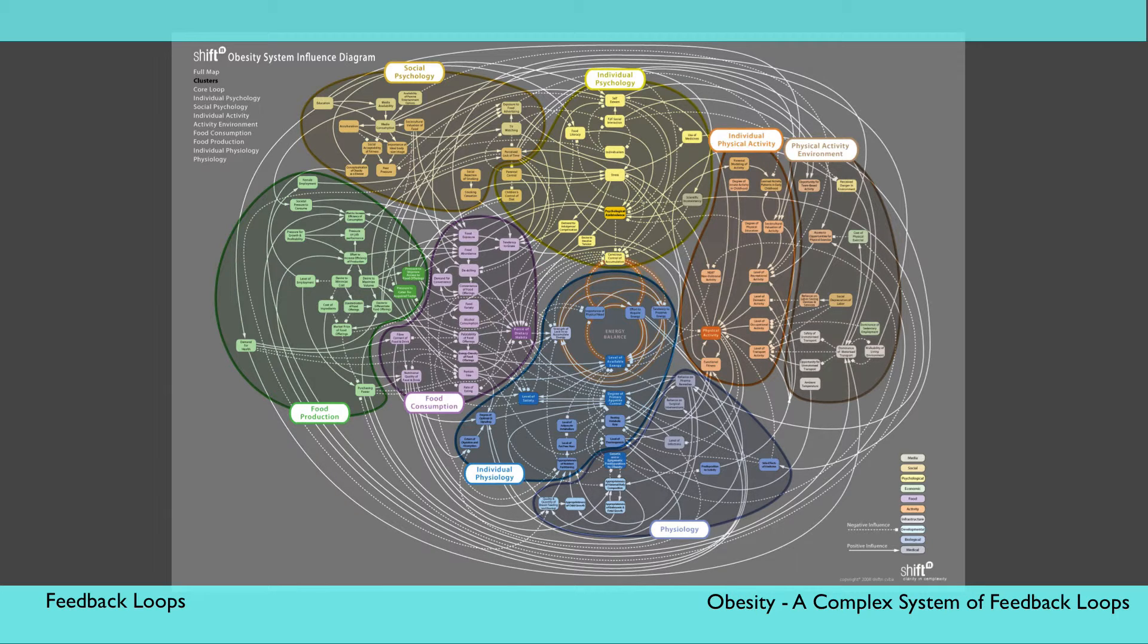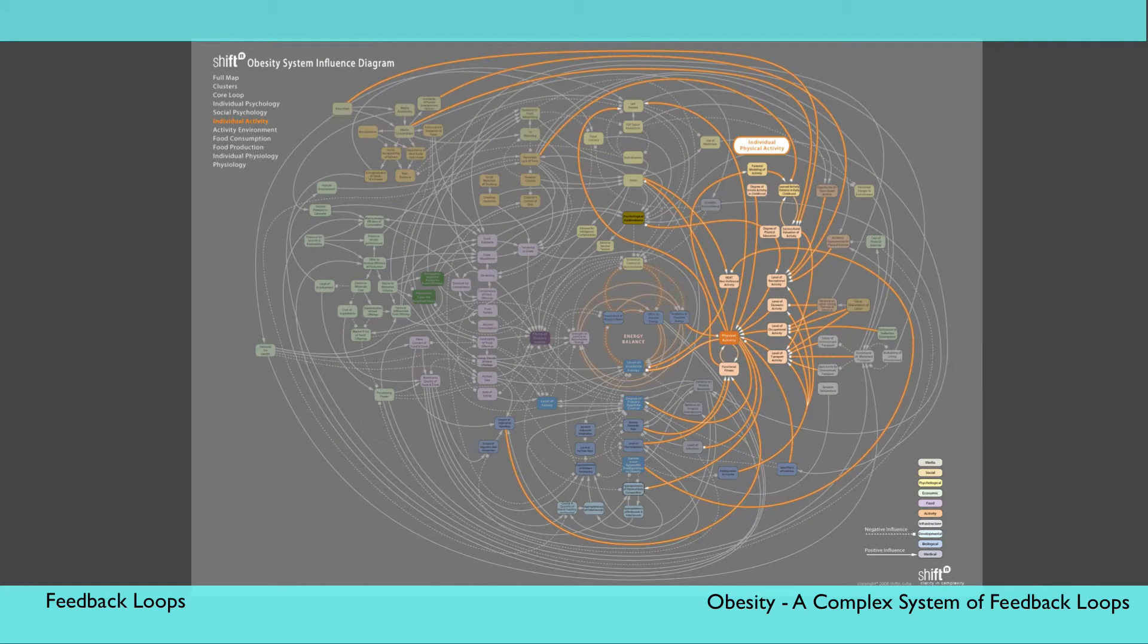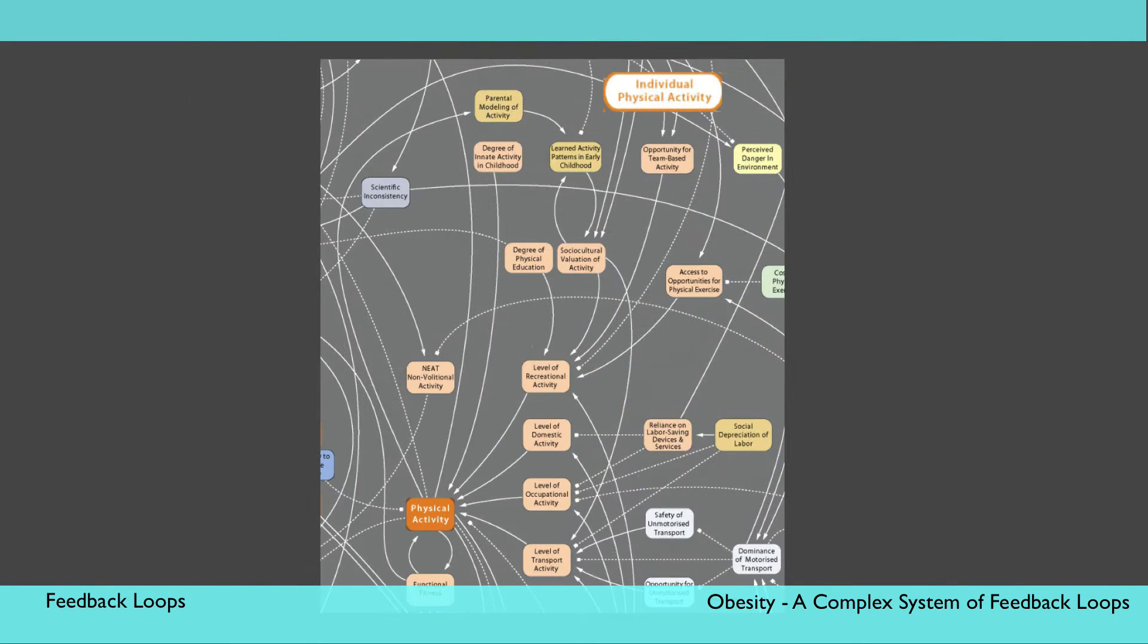For example, if we just look at one cluster, we can better understand how elements interact with each other in this complex system, and see opportunities to engage in the system to support reduction of obesity. In the cluster titled Individual Physical Activity, we can trace the elements and the nature of their interaction.